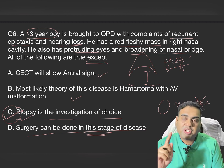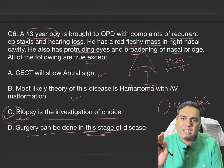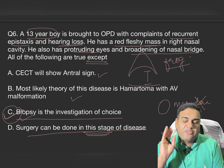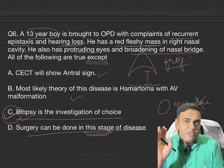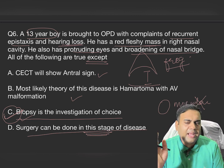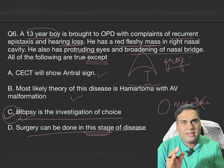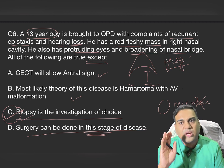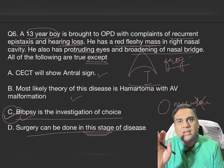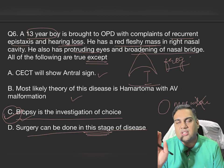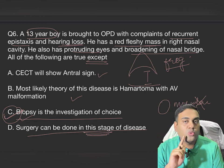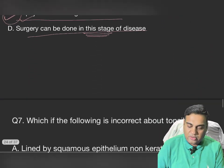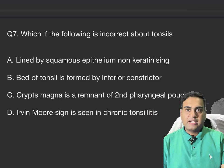For a red fleshy mass with recurrent epistaxis and features suggestive of angiofibroma, get a CT scan done first. If you highly suspect nasopharyngeal angiofibroma, do not perform a biopsy.